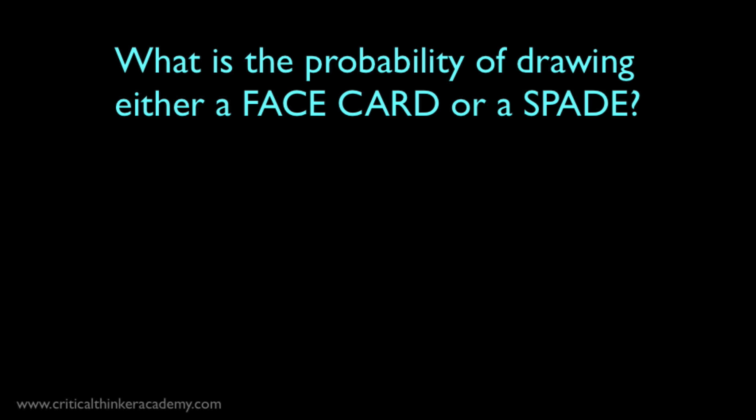Let's look at another example. What is the probability of drawing either a face card or a spade? A face card, remember, is a jack, queen, or king. Any card with a face on it. Here's our rule. It's equal to the probability of drawing a face card, plus the probability of drawing a spade, minus the probability of drawing a card that is both a face card and a spade.